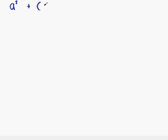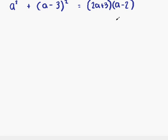Example number 5. We have a squared plus a minus 3 in brackets, all squared, and that's equal to 2a plus 3 in brackets, a minus 2 in brackets. Like before, in order to solve for a, the first thing we need to do is remove the brackets.